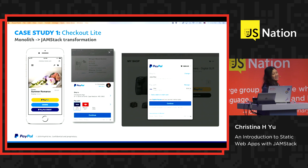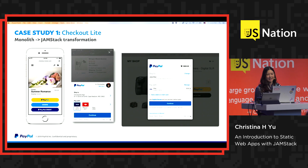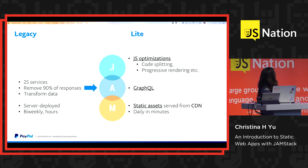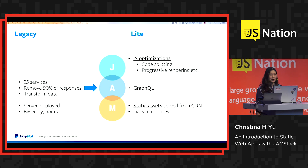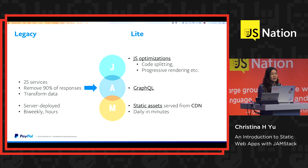Let's look at our first case study. PayPal Checkout handles 50% of PayPal revenue. This year, we moved from a monolith to a more JAMstack-like approach, resulting in a 4x improvement in performance, at least in most geographies. In the lite version — the JAMstack-like version of the app — in terms of JavaScript, we did optimizations like code splitting and progressive rendering. In terms of API, we adopted GraphQL. Previously, developers had to orchestrate between 25 different services, remove 90% of responses, and figure out what each service exposes.